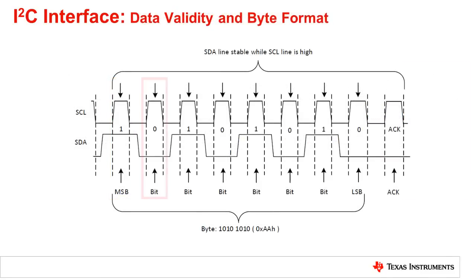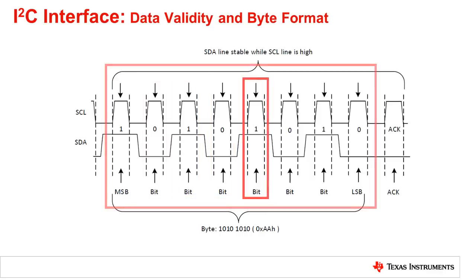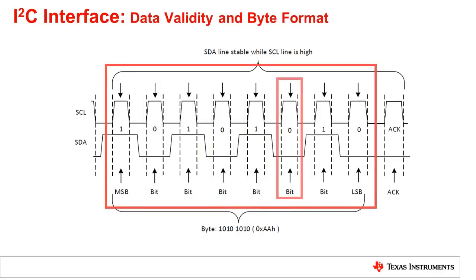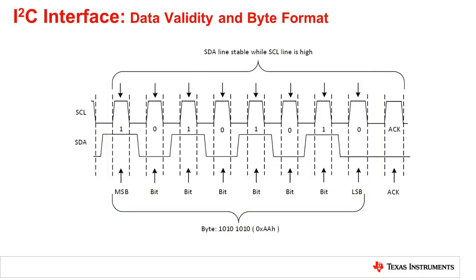One data bit is transferred during each clock pulse of the SCL. One byte is comprised of 8 bits on the SDA line. A byte may either be a device address, register address, or data written to or read from a slave. Any number of data bytes can be transferred from the master to the slave between the start and stop conditions.